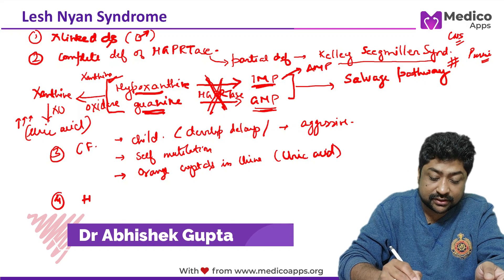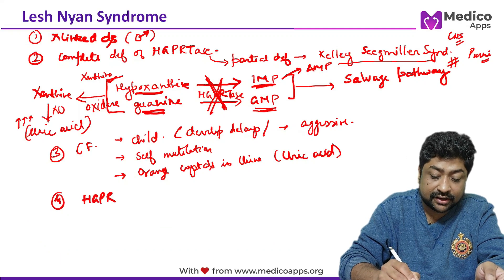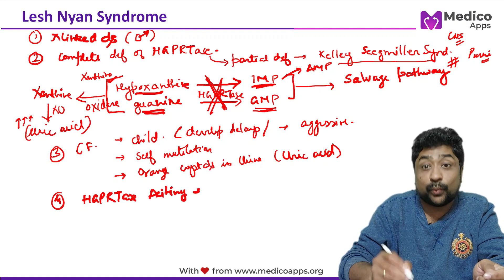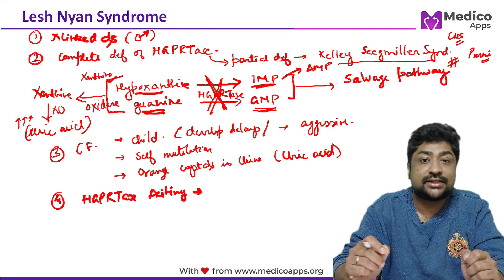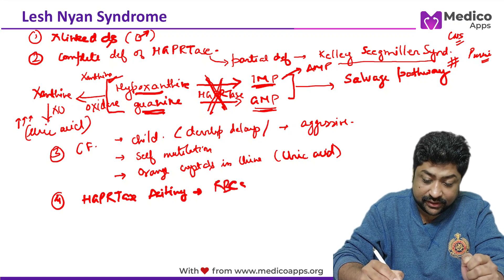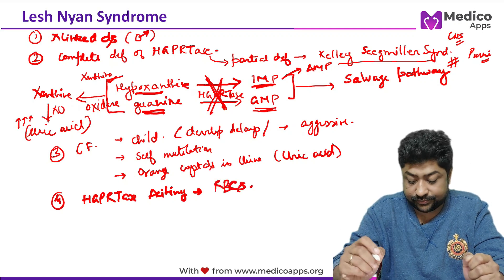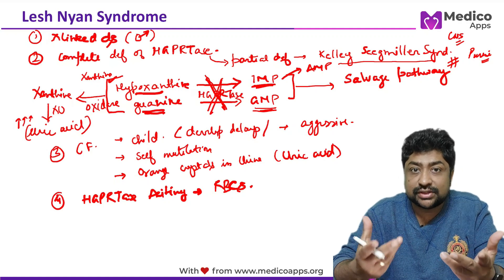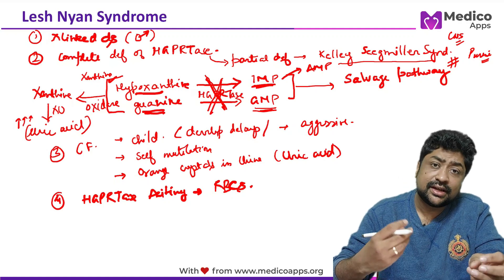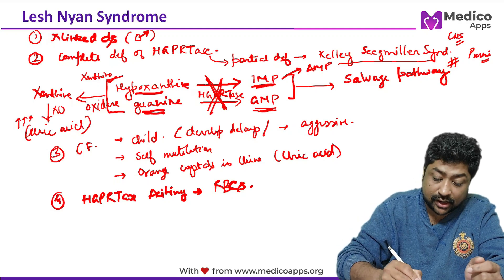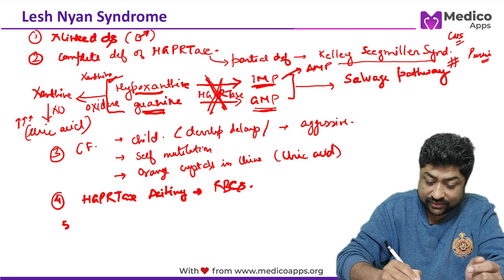For diagnosis, we measure HGPRT enzyme activity. An important exam question is: where is HGPRT activity measured? It is measured in the red blood cells (RBCs). Enzyme studies in RBCs are used to establish the diagnosis.